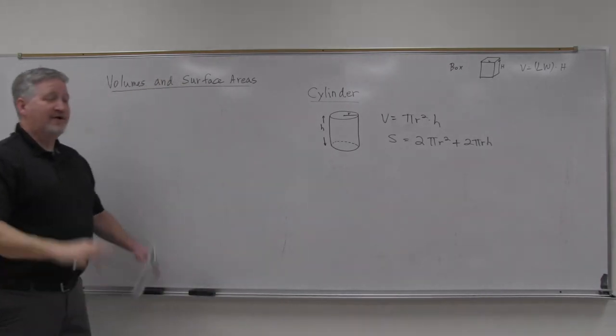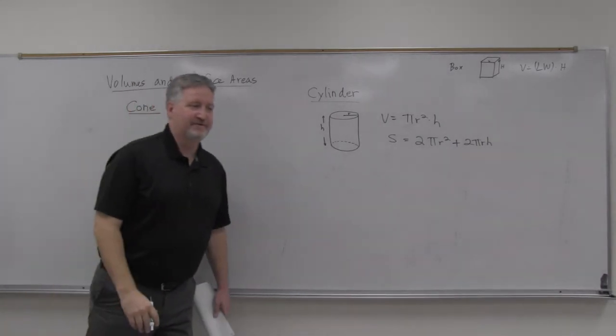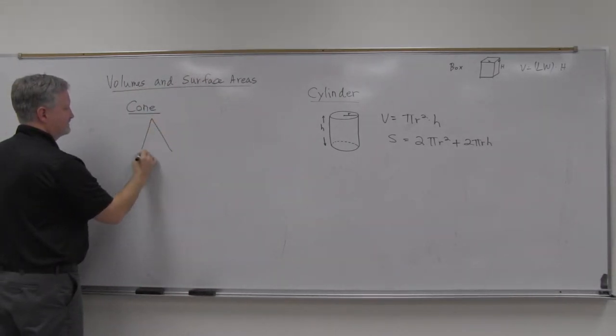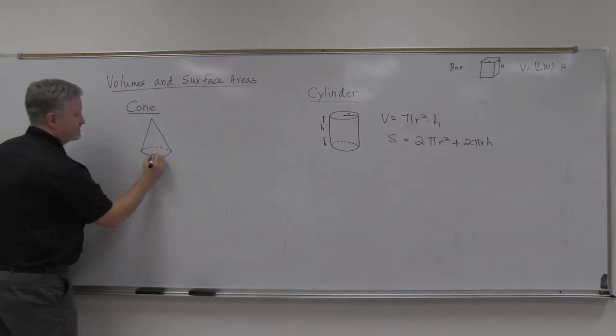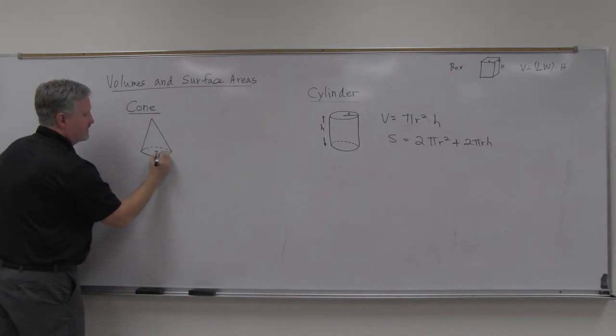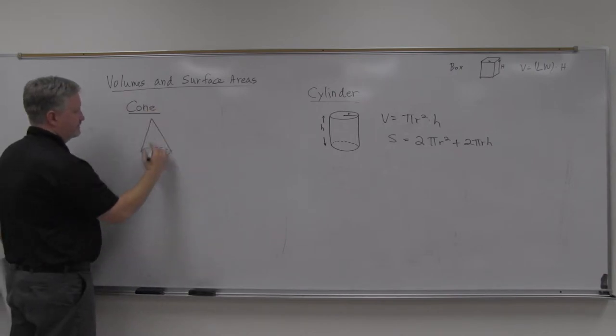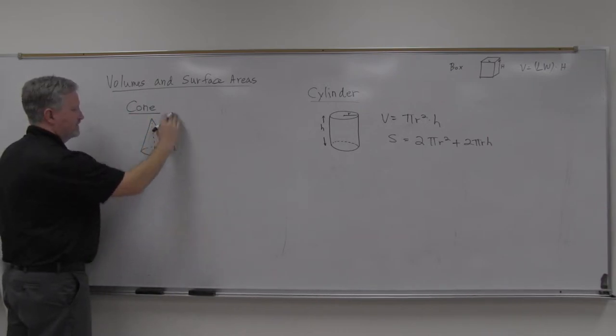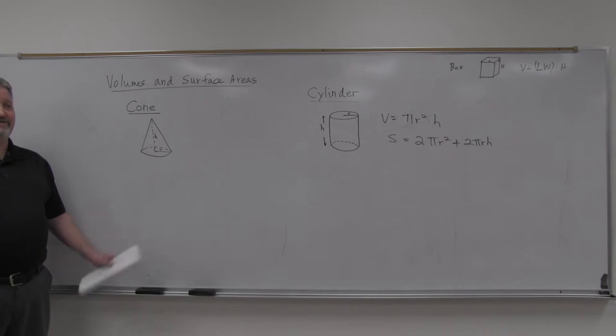Now, the cone is related very much to the cylinder formulas. There are some adjustments there. On the cone, you do need the radius, because you've got a circle for the base there, and you also need the height, from the tip down to the base there. So yeah, you do need a radius and a height for a cone.